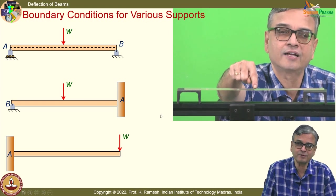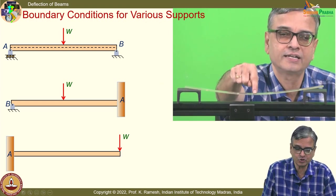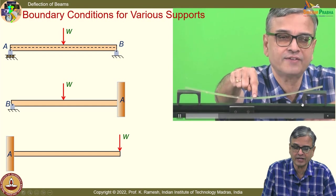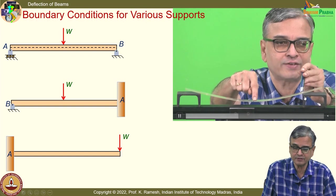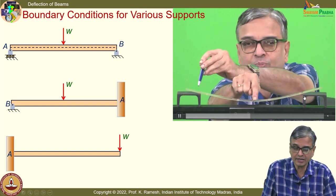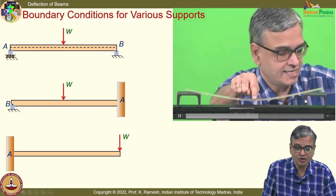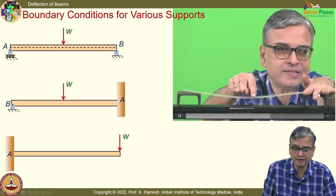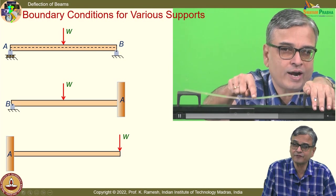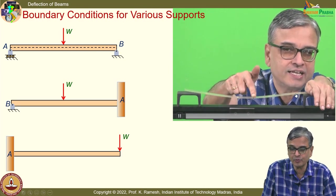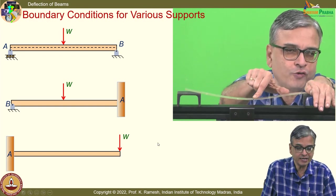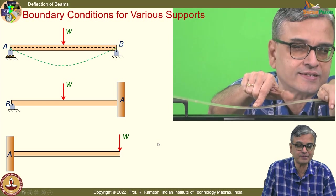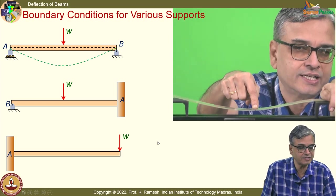One of the aspects in bending is knowing how to write the boundary conditions. For a simply supported end: it will have a slope but deflection is zero. For a fixed end: both deflection and slope are zero. You should know how to write boundary conditions for free ends and other support conditions as well.